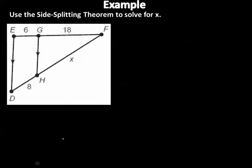Now use the Side Splitting Theorem to solve for x. I'll set up my proportion: EG over GF equals DH over HF. Since I chose EG for the numerator, I have to use DH in the numerator on the other side; since I chose GF for the denominator, I have to use HF in the denominator. I always like to set up the proportion first before substituting numbers.